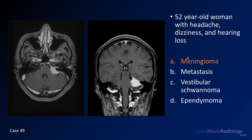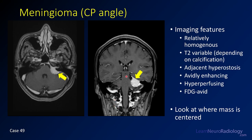This is a case of a meningioma. The mass looks centered along the tentorium or dura — it may extend into the IAC a little, but doesn't expand it and doesn't look centered there. The key rule: a CP angle mass that enhances is a schwannoma or meningioma. If it's centered in and expands the IAC, it's a schwannoma. If it's outside, it's probably a meningioma. Meningiomas can also be FDG avid or hyperperfusing.